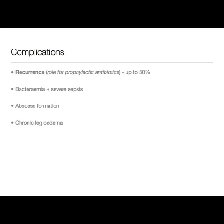In terms of complications, the first and perhaps most important is recurrence. Up to 30% of patients get a recurrent episode, and recent guidelines suggest that if there are two or more episodes at the same site, it may be worth giving prophylactic antibiotics in the form of penicillin V or erythromycin. Other complications include systemic sepsis causing bacteremia and severe sepsis — class four of the CREST system — abscess formation requiring incision and drainage, and chronic leg edema, which is a rare but problematic complication.